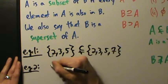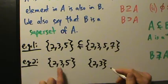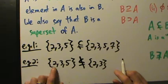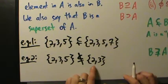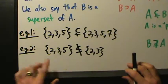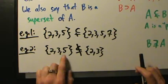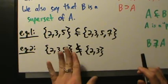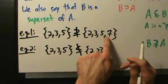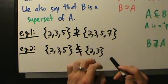Example two: {2, 3, 5} is NOT a subset of {2, 3}. We write this with a slash through the entire subset symbol. Why? Because five is in the first set but not in the second — so not every element of the first set is in the second. Likewise, from example one, {2, 3, 5, 7} is not a subset of {2, 3, 5} because seven is not there.